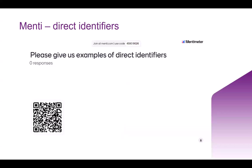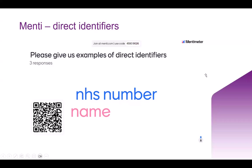We're going to pause here to see if you've got the gist of direct and indirect identifiers using Mentimeter. If you go to menti.com and type in the code 45939026, you should be able to join. Pop in something you think would be a direct identifier — see what kind of identifiers you can come up with.